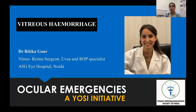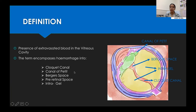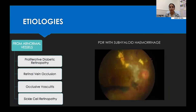Hi all, today I would like to discuss vitreous haemorrhage briefly. Vitreous haemorrhage is the presence of extravasated blood in the vitreous cavity, and the term encompasses haemorrhage into all small cavities like Cloquet's canal, canal of Petit, the Berger space, and the pre-retinal space, which involves both sub-Tenon's haemorrhage and sub-hyaloid haemorrhage.